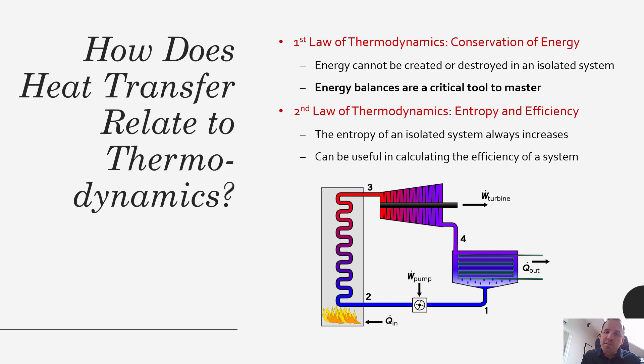Heat transfer also relates to the second law of thermodynamics, which is related to entropy and efficiency. It states that no system can be perfectly 100% efficient, and it certainly can't be more than 100% efficient. The entropy of an isolated system is always increasing, which can be useful when calculating the efficiency of a system.